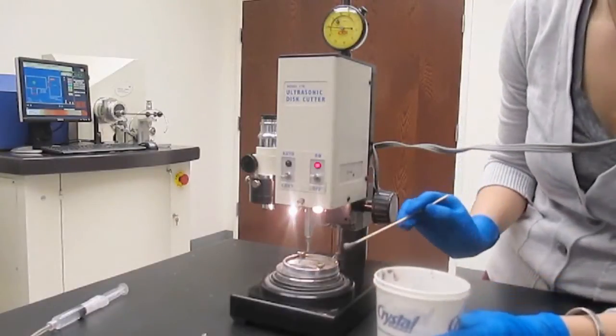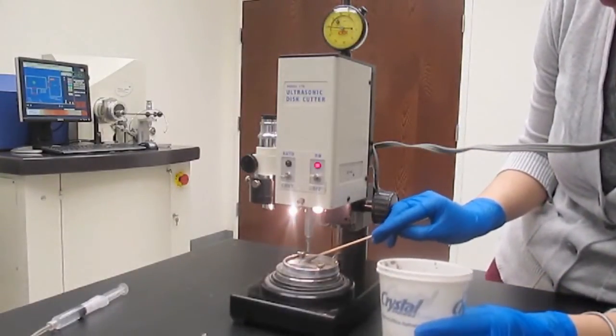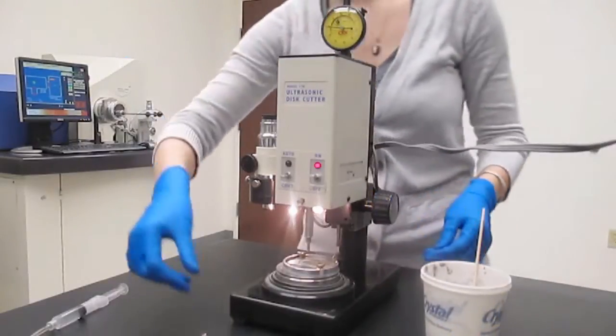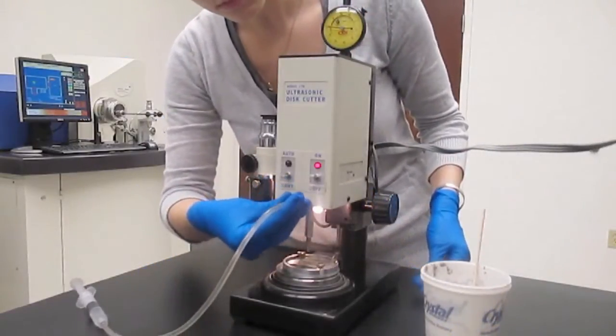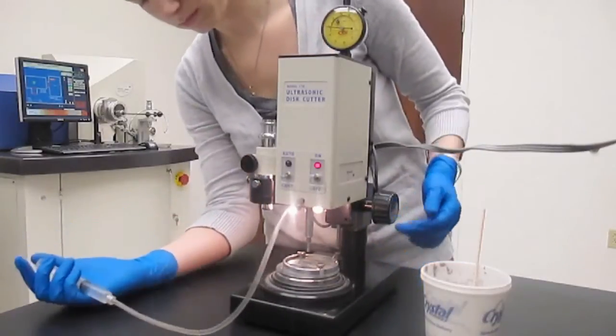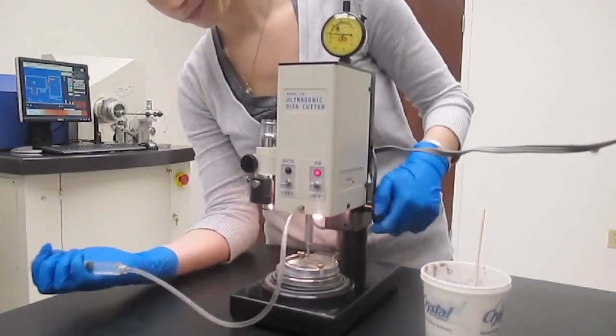Add silicon carbide abrasive powder to the surface of the glass beneath the cutting tool. Attach the syringe to the front of the disk cutter and add water from the syringe onto the surface of the glass. The silicon carbide powder will become a paste.